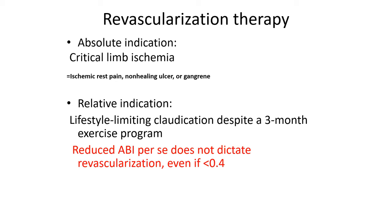We started talking about revascularization therapy for peripheral arterial disease. There are two major indications: the absolute indication, critical limb ischemia, and the relative indication, lifestyle-limiting claudication. That depends on the patient — how active they are and what their lifestyle is — the same way we assess angina. We don't go by ABI specifically, or the severity of ABI, to decide about the indication for revascularization.